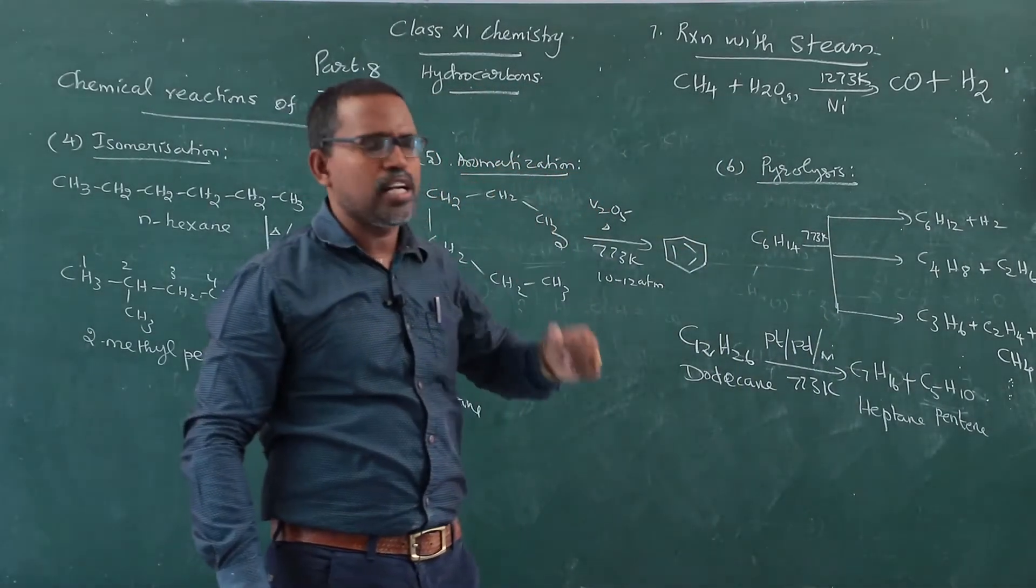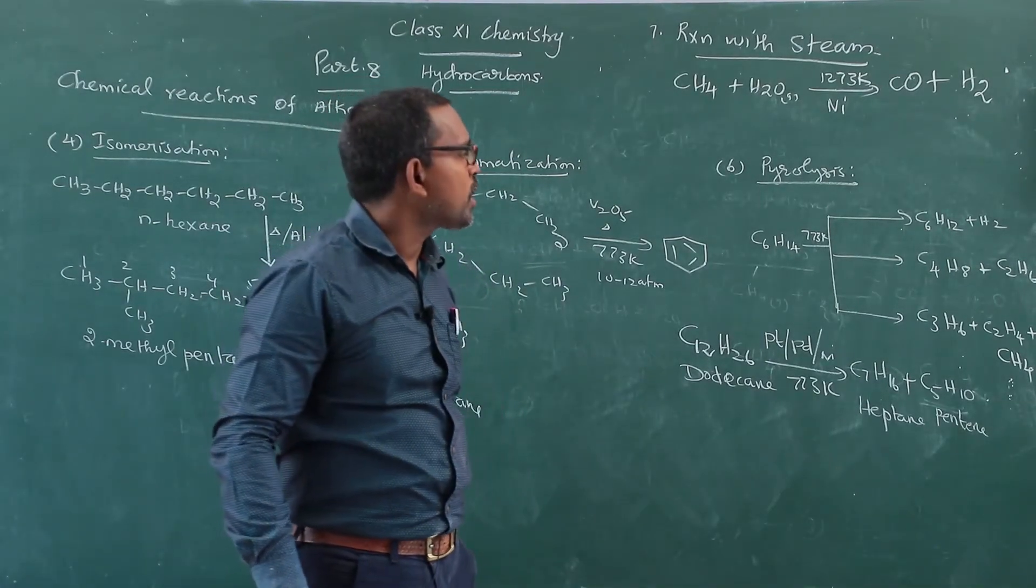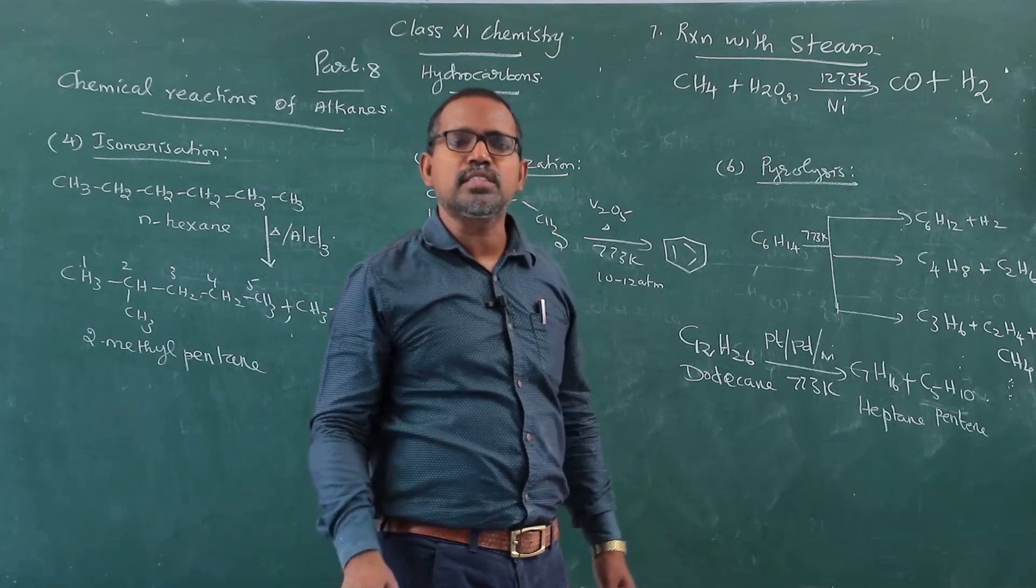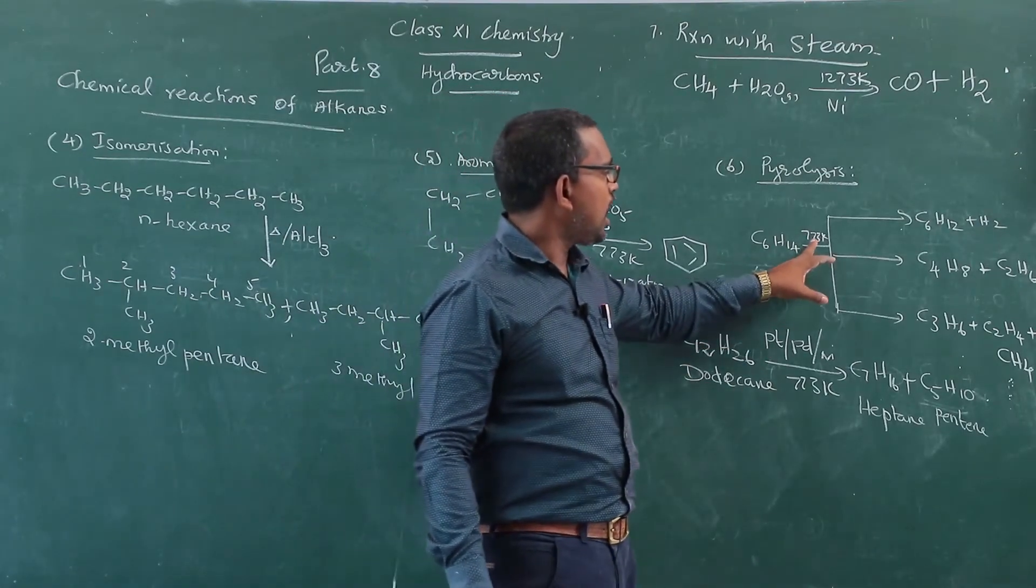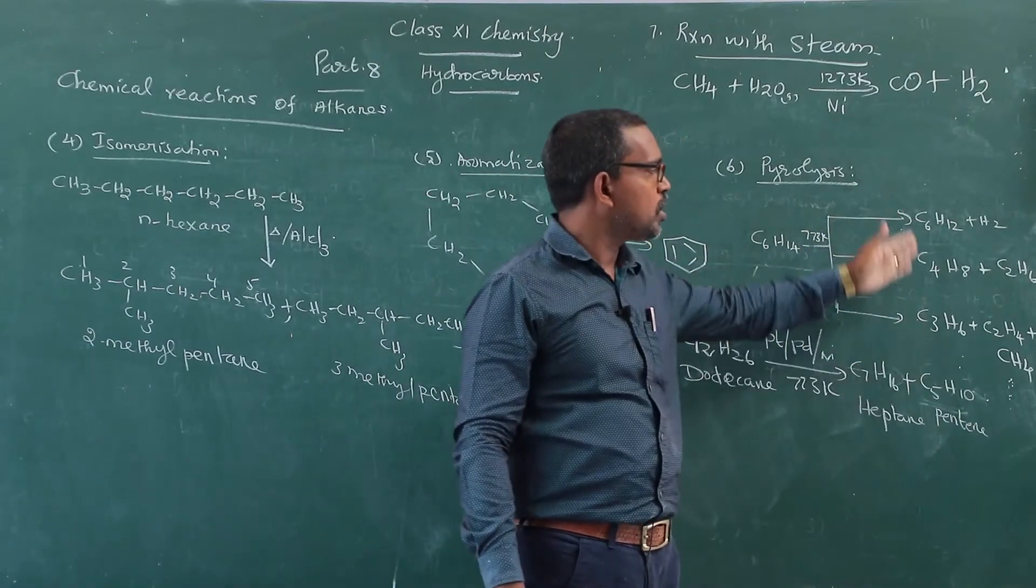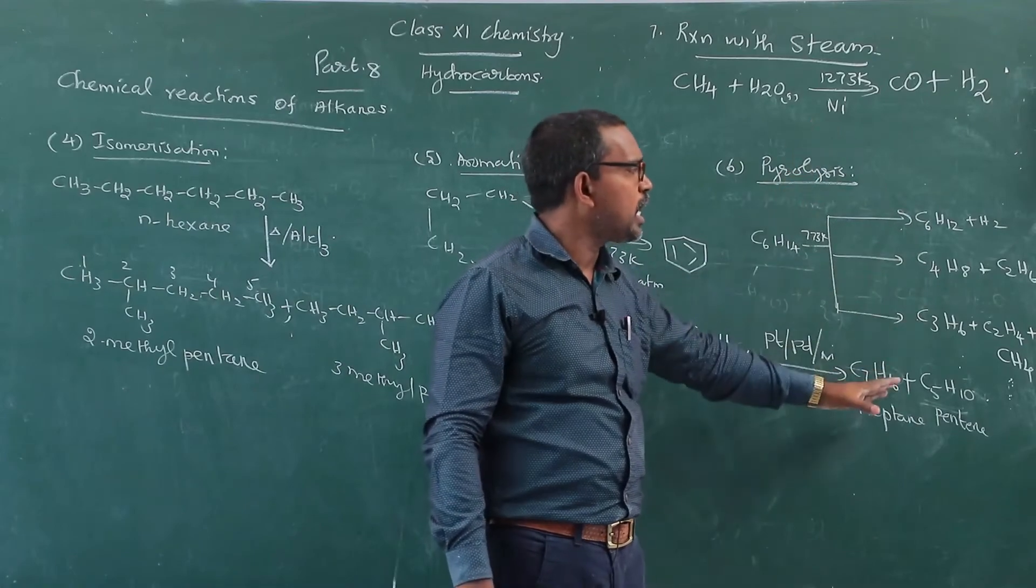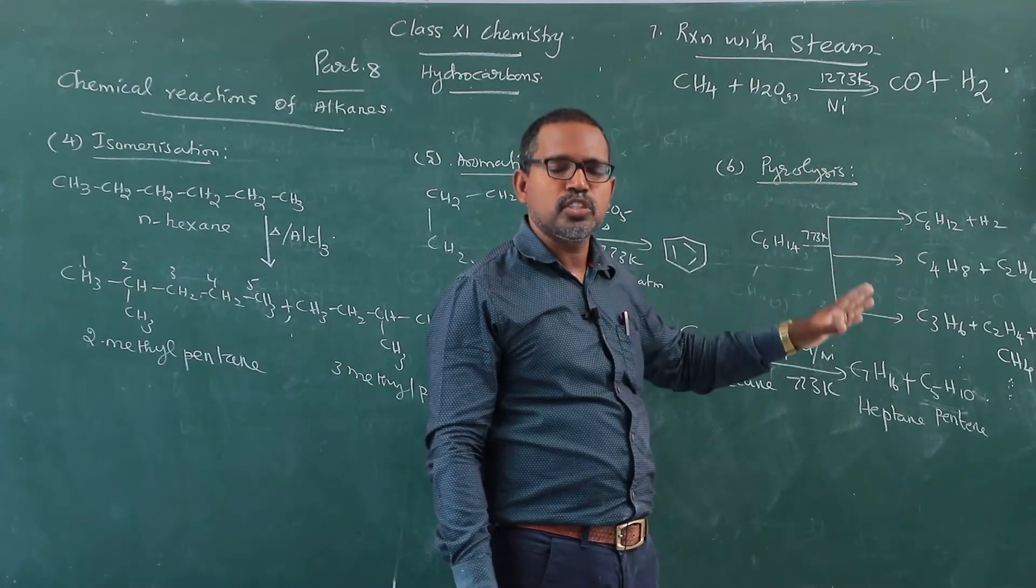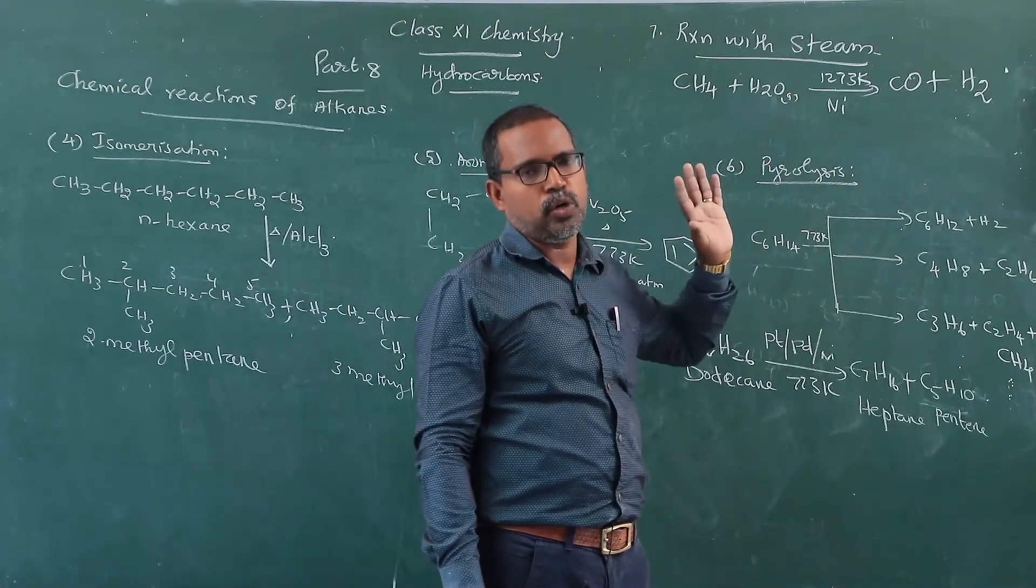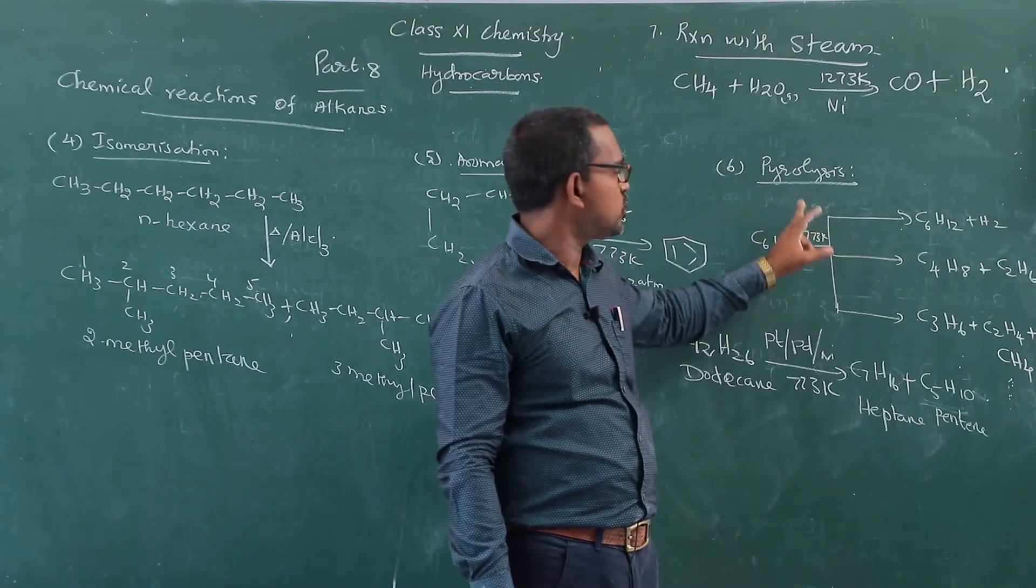The last one is pyrolysis. I already told you, heavier alkanes are passing over metallic oxides as the catalyst at the temperature of 773 Kelvin. It gives, or the heavier alkanes break down into smaller alkanes. The process is called cracking of petroleum and generally, it is referred to as pyrolysis, pyrolysis.